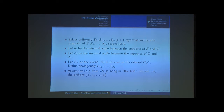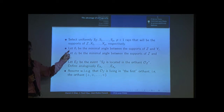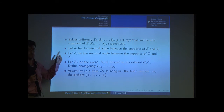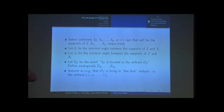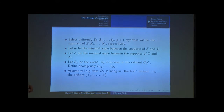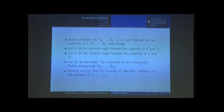Let us consider the event e_z as the event that the support is located in an orthant — a hyperoctant, which is a quadrant in two dimensions, an octant in three dimensions, and an orthant beyond that. Define analogously e_{x1} to e_{xp}, where e_z is the event that the support is located in one of the hyperoctants.